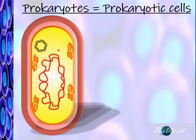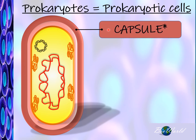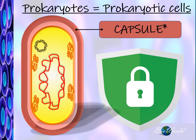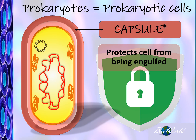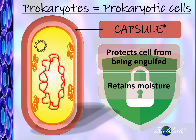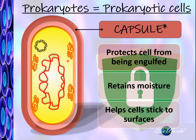Some prokaryotes have an external layer called a capsule. Bacteria with a capsule are more dangerous because the capsule provides protection. When the bacteria infects a human, for example, the capsule protects it from being engulfed by white blood cells. The capsule also helps retain moisture so the bacteria does not dehydrate, and it can help the bacteria stick to the surface of host cells it wants to infect.